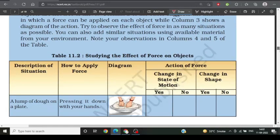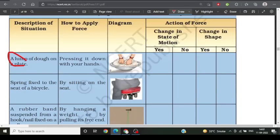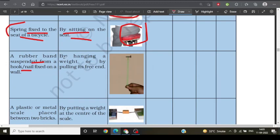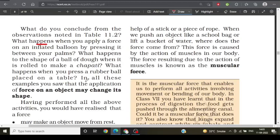First, lump dough on a plate. What will happen? It'll change the shape. It'll change from a lump. Hang a rubber band from a hook and nail fixed in a wall. When you pull it, it will stretch and then come back to its original form. In all these examples you saw that force on an object can cause the shape to change.